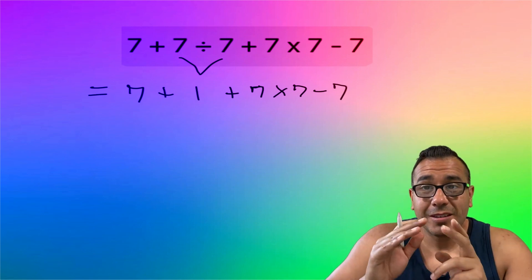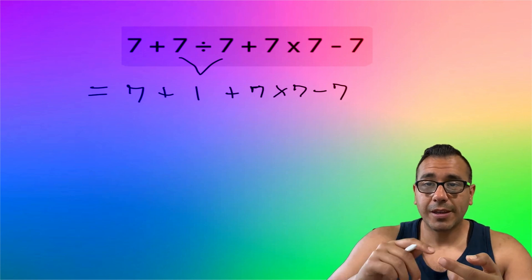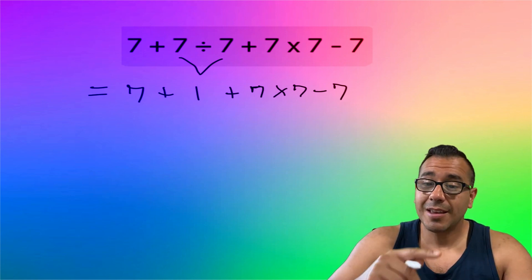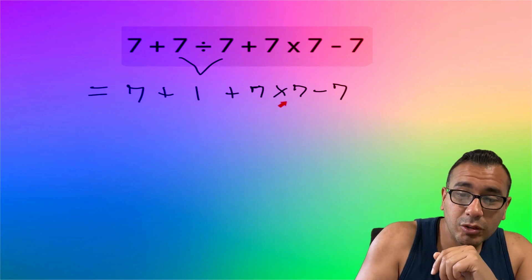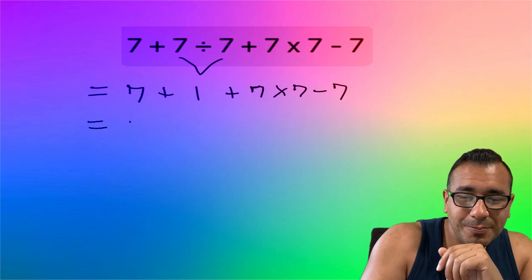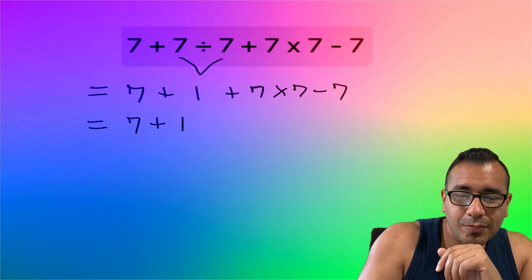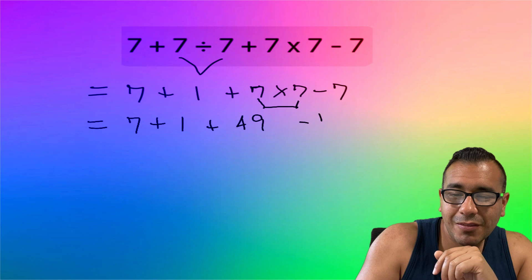So now I ask myself, do I have any more multiplication or division signs? Yeah, we still got a multiplication sign right here, so now we got to multiply that before we do anything else. So let's go ahead and handle business. Boom, plus 49. So these two right here gave me that 49, and then that minus 7.